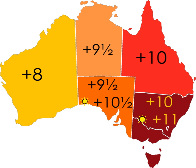The change to and from DST takes place at 2am local standard time on the appropriate Sunday. Until 2008, DST usually began on the last Sunday in October and ended on the last Sunday in March. However, Tasmania, given its latitude further south, began DST earlier on the first Sunday in October and ended it later on the first Sunday of April.